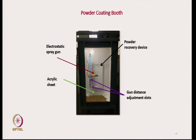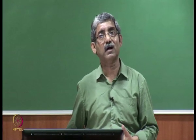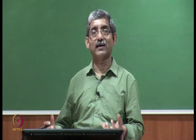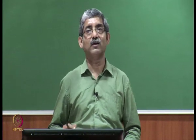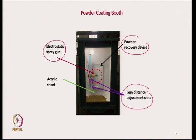Then after that it comes to the powder coating booth. This powder coating booth consists of acrylic sheet which helps in proper viewing, an electrostatic spray gun, and a powder recovery device. During powder coating, what we observed is that the effective powder take-up by the tow is very, very low — typically 4 to 5 percent maximum; 95 to 96 percent of powders are not being used. We have to recover this powder for reuse. The gun distance and gun height can also be adjusted using the adjustment slot.